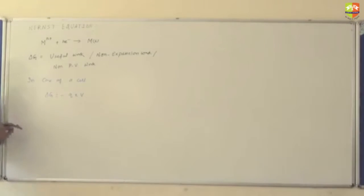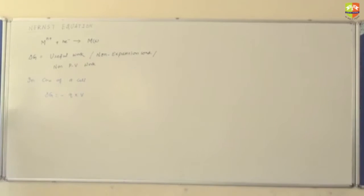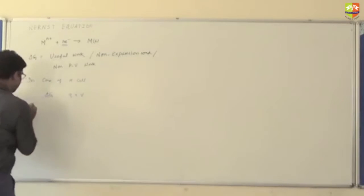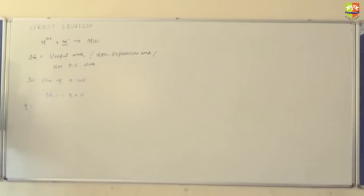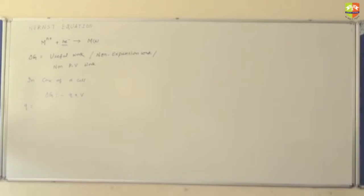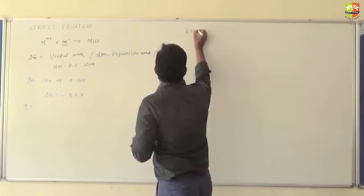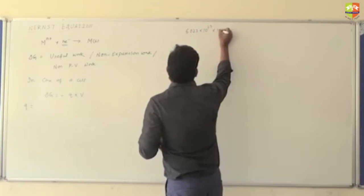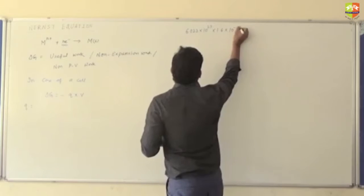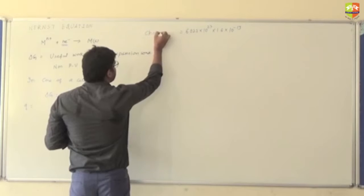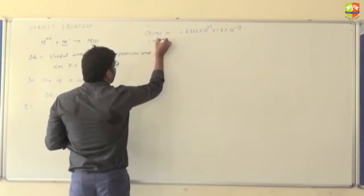Now, you have to find out what is Q and what is V. Q is the charge. And what is the charge we are using here? N moles of electrons. So, Q is the charge on N moles of electrons: N into 1.6 into 10 to the power minus 19, into 6.02 into 10 to the power 23. For 1 mole of electron, the charge is 6.022 into 10 to the power 23, multiplied by 1.6 into 10 to the power minus 19.